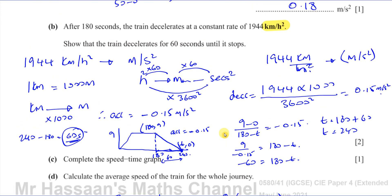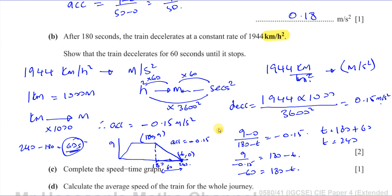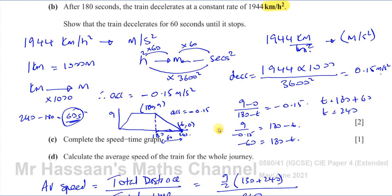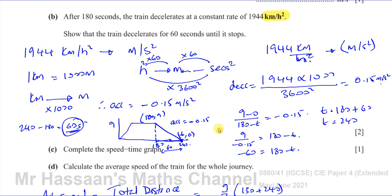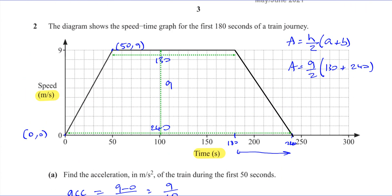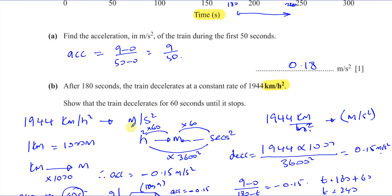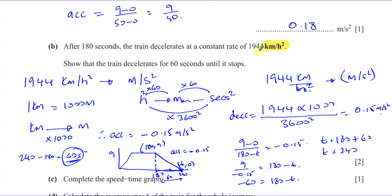So that's the answer to question number two from May-June 2021. The important thing in this question is the bold type — always ask yourself why they put something in bold. Look at the units. We have to change this, and you should know how to change units of speed and acceleration.